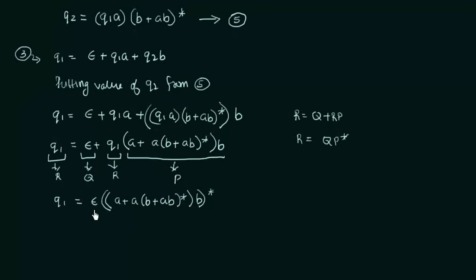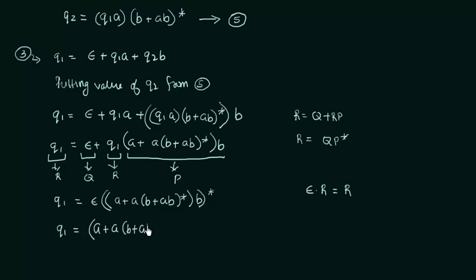Since ε into any regular expression R equals R itself, we simplify Q1 = (A + A(B + AB)*B)*. This is equation number 6. We have now simplified the values of Q1, Q2 and Q3.